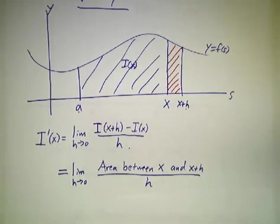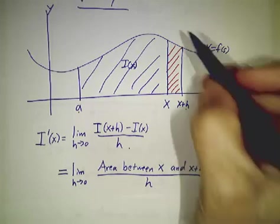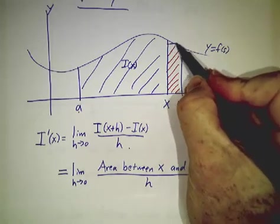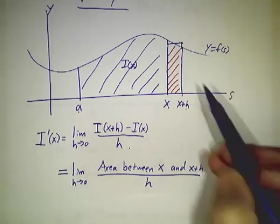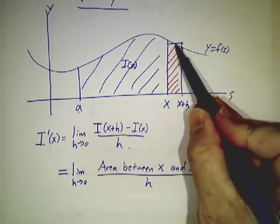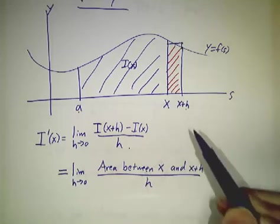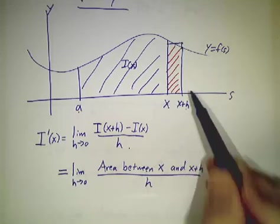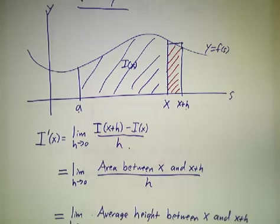And what's the difference between them? Well, the difference between them is the red area. It's just the area between x and x plus h. And we want to divide that by h. So if you think of this as being approximately a rectangle, you got the width times the average height. That's the area, and you divide by the width, and you're just going to get the average height.